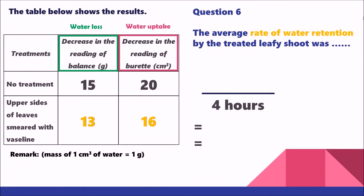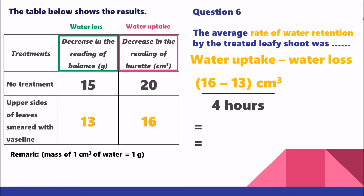Question 6 asks for the average rate of water retention by the treated leafy shoot. Water uptake is 16 cm³ and water loss is 13 grams. Water uptake minus water loss is 16 minus 13, giving 3. Dividing by 4 hours gives a rate of 0.75 cm³ per hour, or equivalently 0.75 grams per hour.